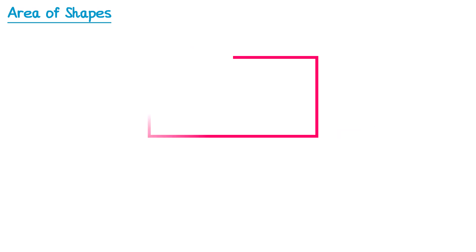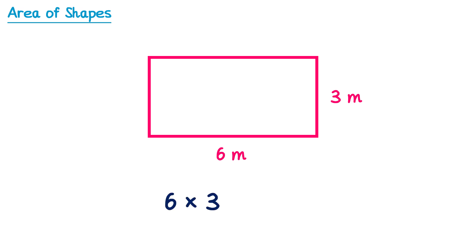Let's try this with another rectangle. For this rectangle here, we have a base of 6m and a height of 3m. So to find the area, all we need to do is multiply 6 and 3, which gives you 18. This time the lengths are in meters, which means the area will be in meters squared.